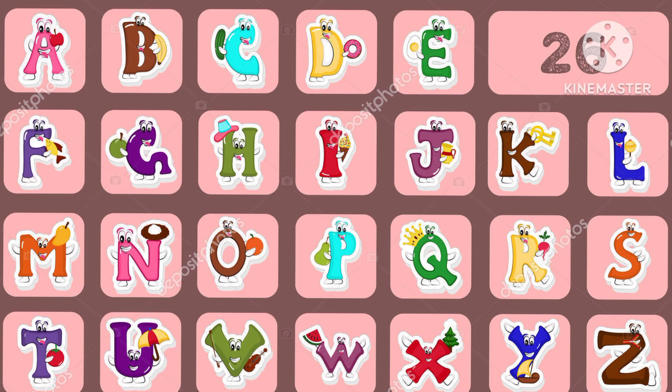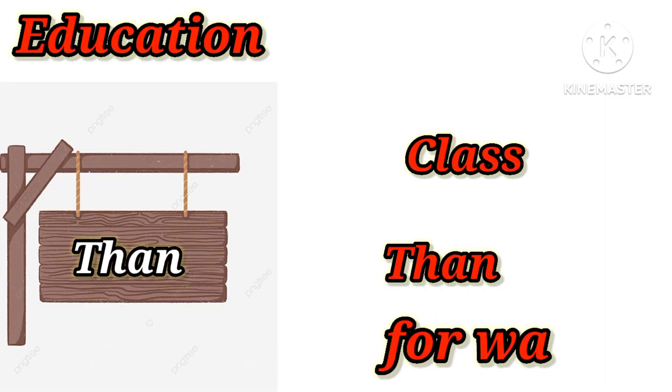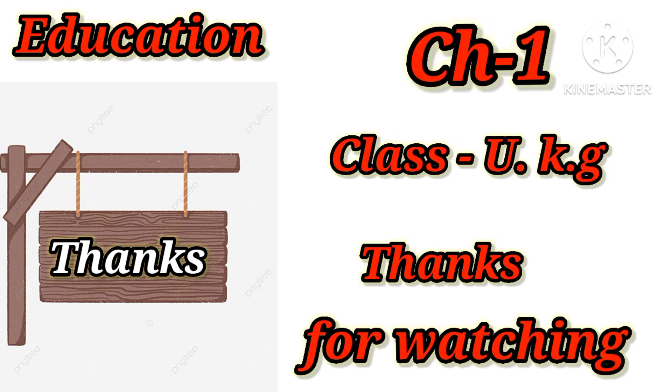Now learn A to Z alphabet. A, B, C, D, E, F, G, H, I, J, K, L, M, N, O, P, Q, R, S, T, U, V, W, X, Y, Z. We have learned A to Z alphabet. Thanks for watching the video! Like, share, and subscribe to my channel!